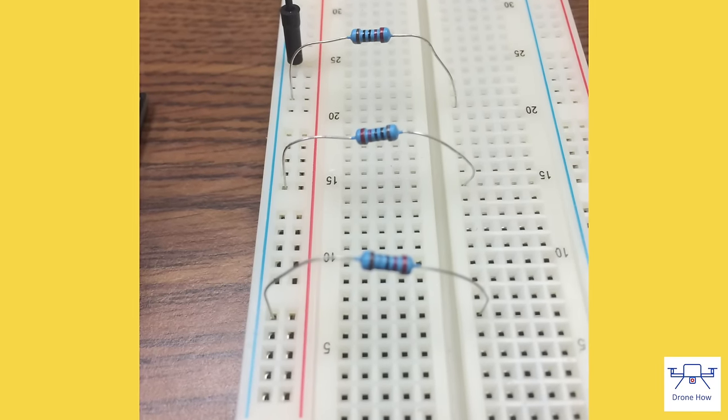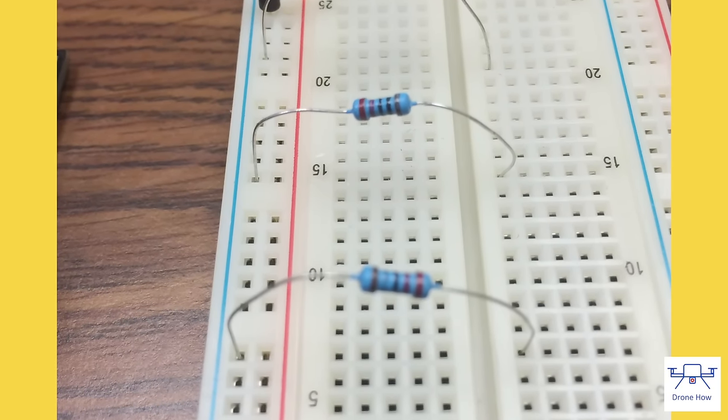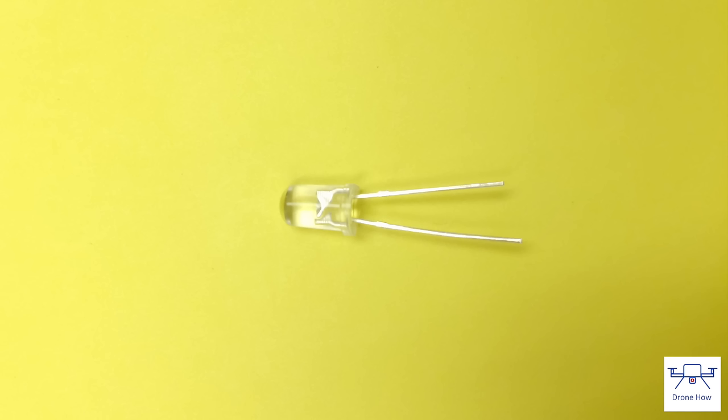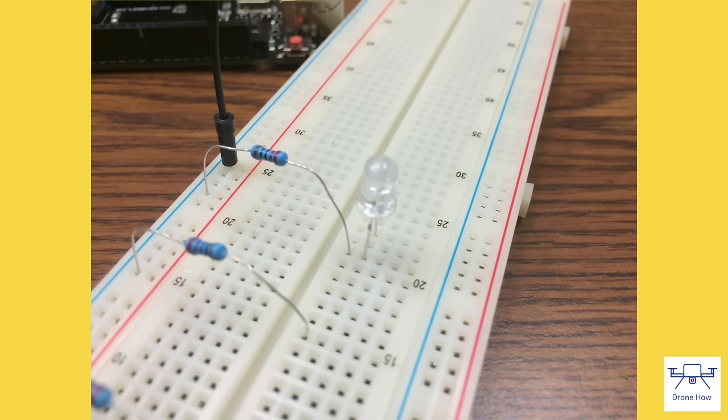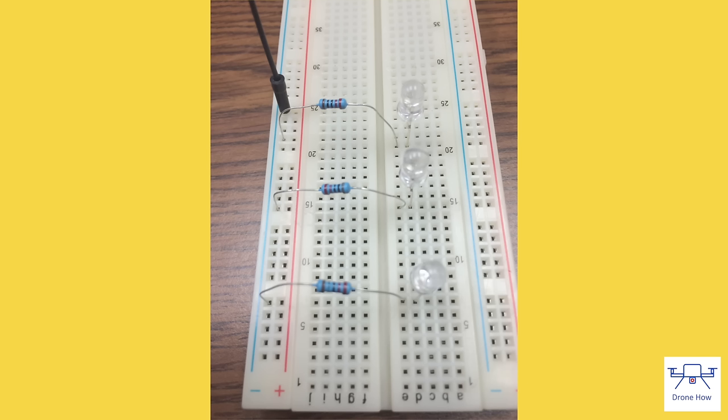Now we'll insert the resistors into the breadboard. Space the resistors out with one leg connected to the negative rail. Now it's time to insert the LEDs. Before inserting the LEDs, it's important to note that the longer of the two leads on most through-hole LEDs is the positive lead. Connecting it the wrong way will cause the circuit to not work. Connect the negative lead of the LED to the horizontal rail on which the resistor is connected and connect the positive lead to an adjacent rail. Repeat this process for all three LEDs.